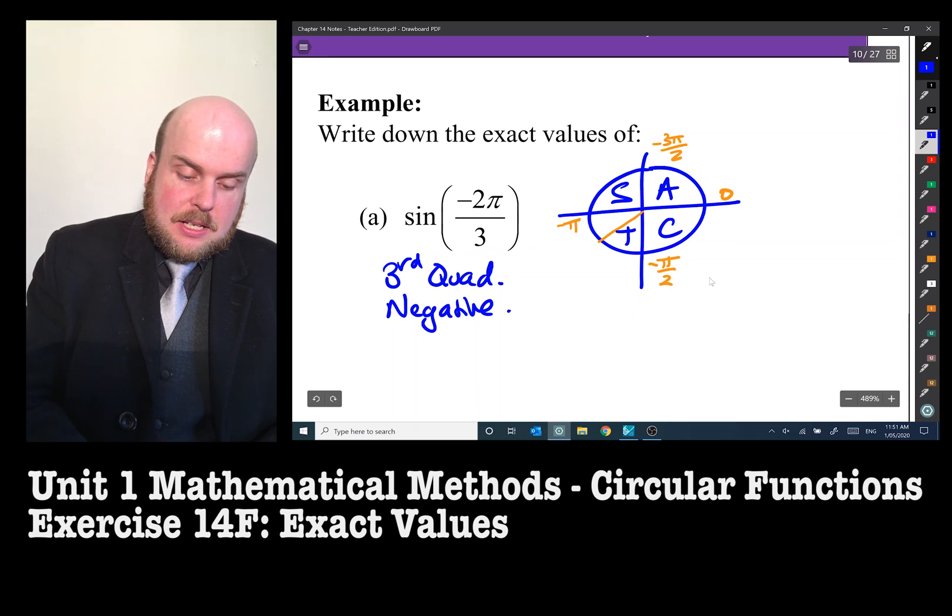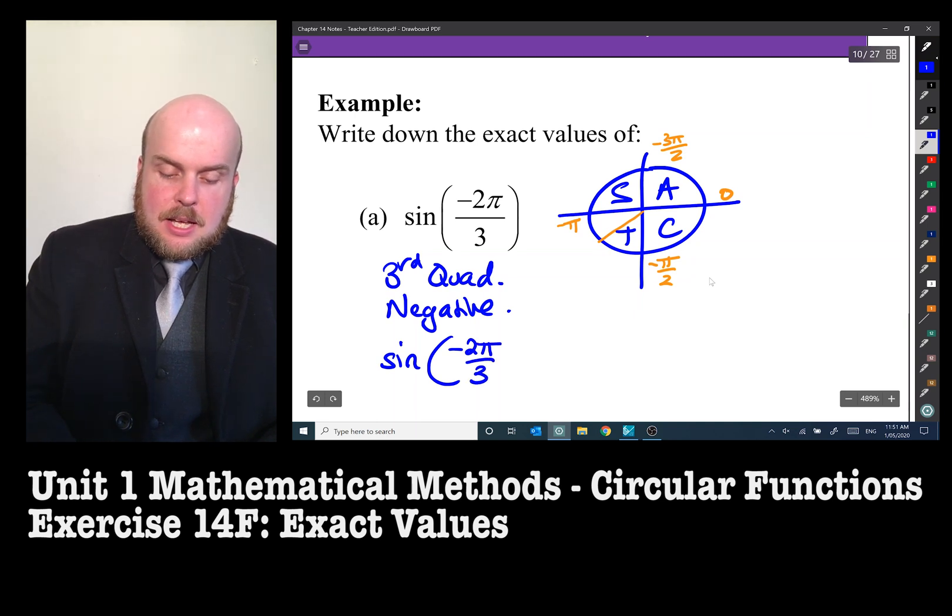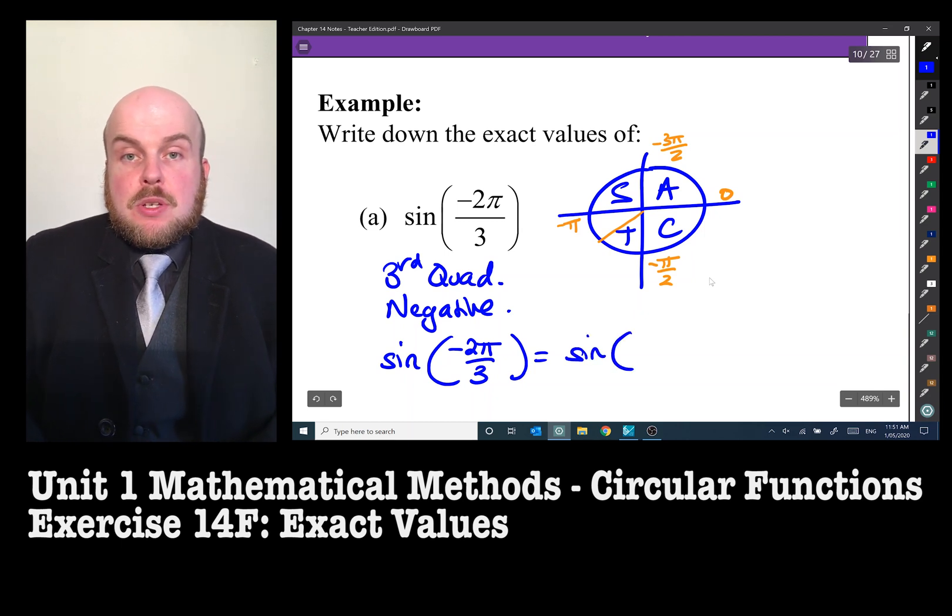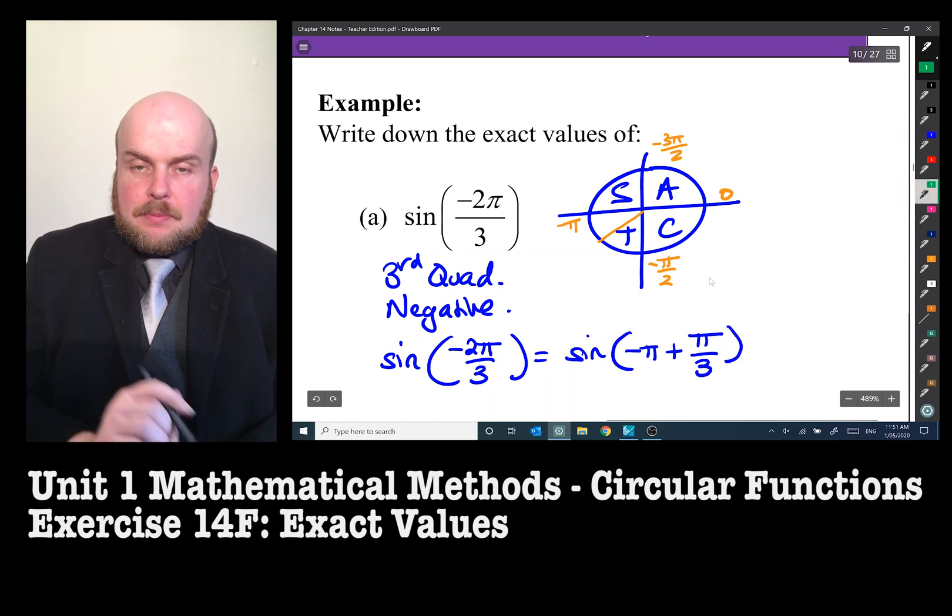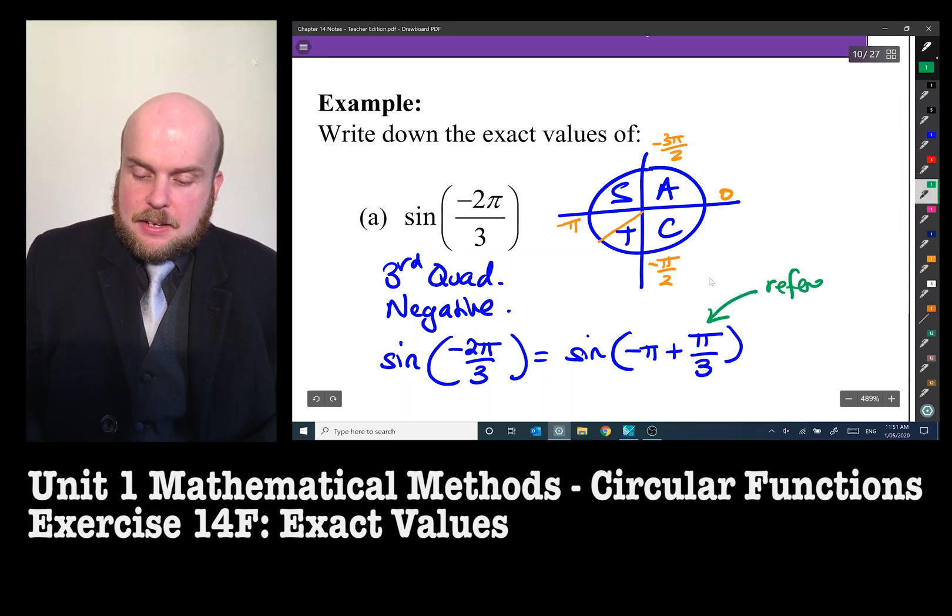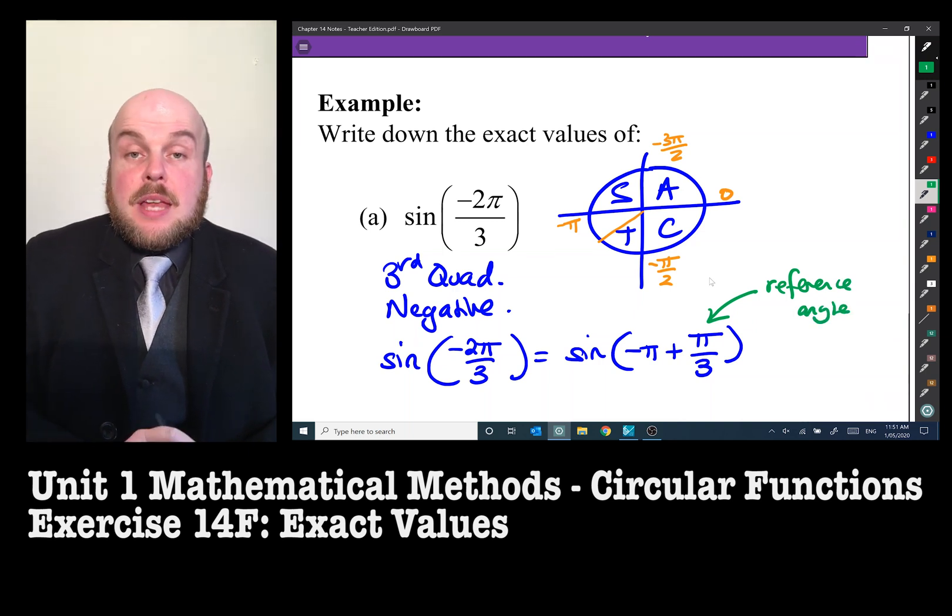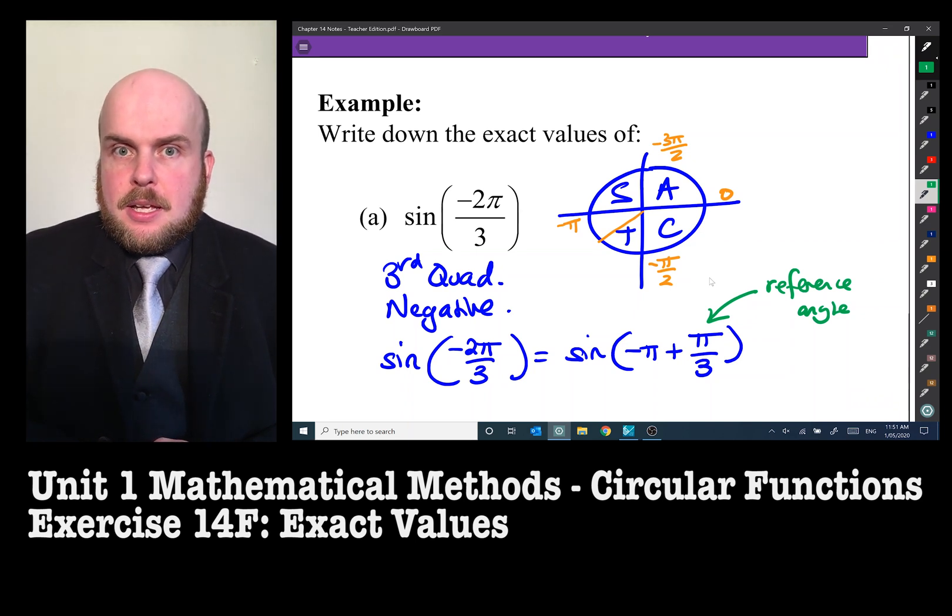So now all I need to do here is sine negative two pi on three is equal to sine—and remember when we're doing the symmetry properties, we rewrite this such that it's negative pi plus pi on three. So there's my reference angle there, because negative pi is the same as negative three pi on three, and so plus a pi on three gets me negative two pi on three.